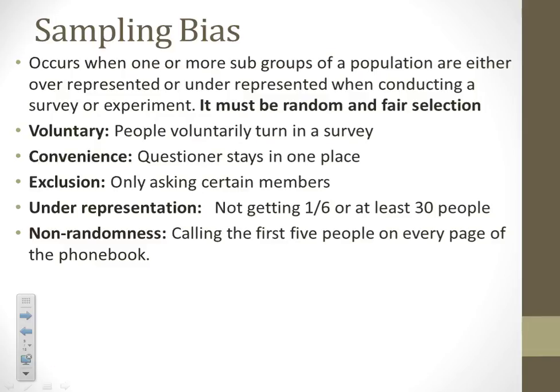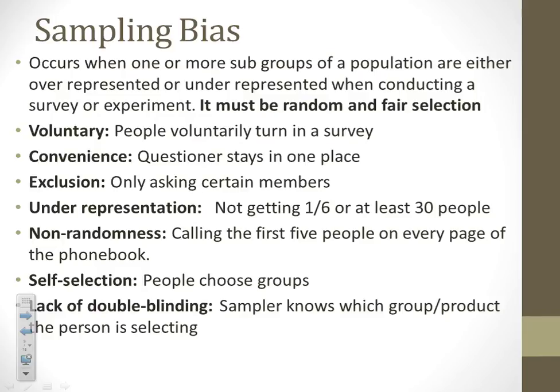Or just random bias — if you pick the first five people on every page of the homework, what about the other 95% of the page? They don't even have a chance. Or self-selection, where people choose their own groups. And a lack of double blindness — we talked about that last week — can also affect sampling bias.